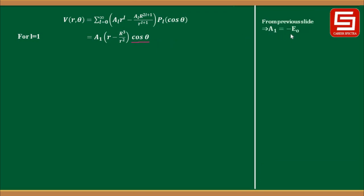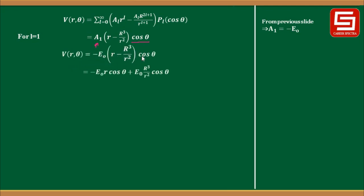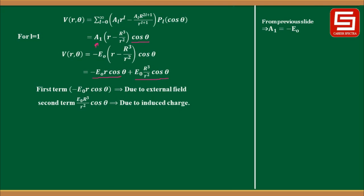Substituting B₁ = −A₁ R³ and A₁ = −E₀ into the general expression for l = 1, the outside potential becomes: V(r,θ) = A₁(r − R³/r²) cosθ = −E₀(r − R³/r²) cosθ = −E₀ r cosθ + E₀ R³/r² cosθ. The first term is due to the external field and the second term is due to the induced charge.